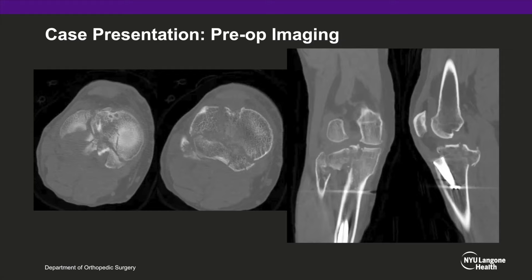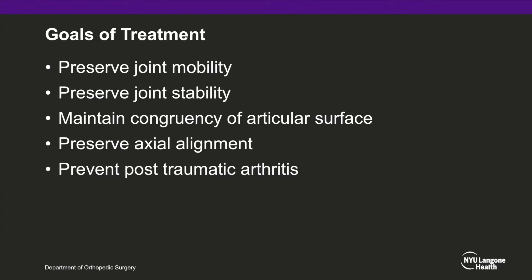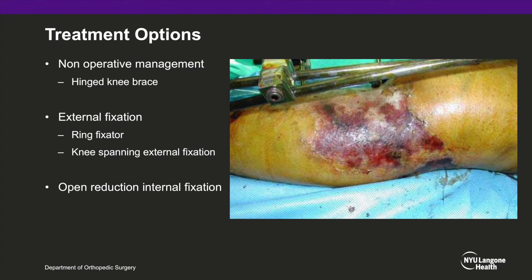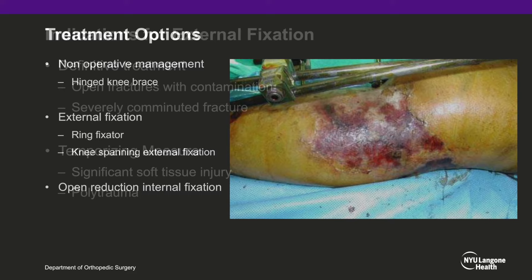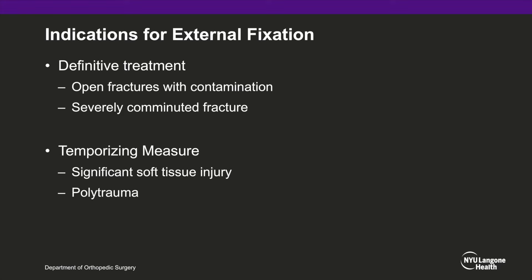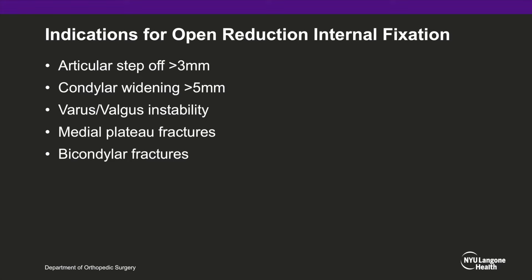The goals of treatment for this fracture are to preserve joint mobility, joint stability, articular surface congruence, and axial alignment, as well as to provide freedom from pain and prevent post-traumatic osteoarthritis. Treatment options include non-operative management, external fixation, or open reduction internal fixation. External fixation can be used as definitive treatment for open fractures with gross contamination or severely comminuted fractures where ORIF is not amenable, or as a temporizing measure for severe soft tissue injury. Indications for ORIF include articular step-off greater than 3 mm, condylar widening greater than 5 mm, varus or valgus instability, a medial plateau fracture, or a bicondylar fracture.